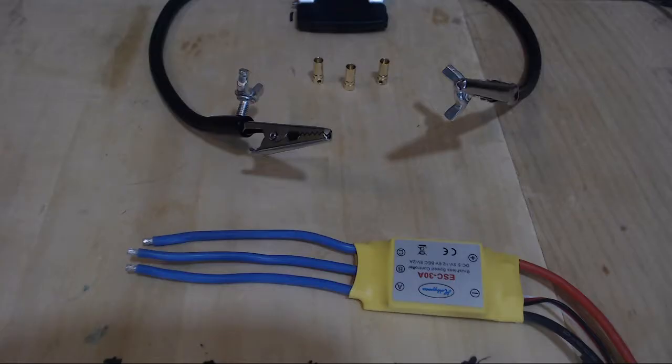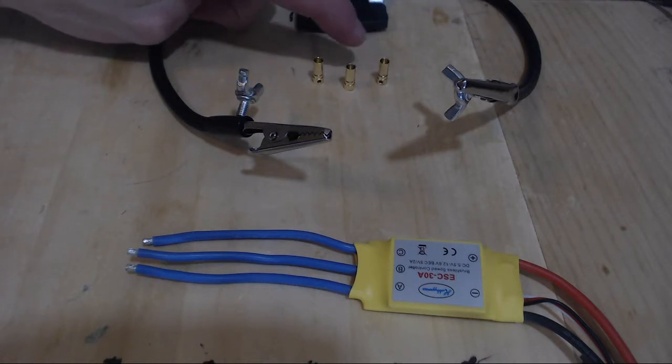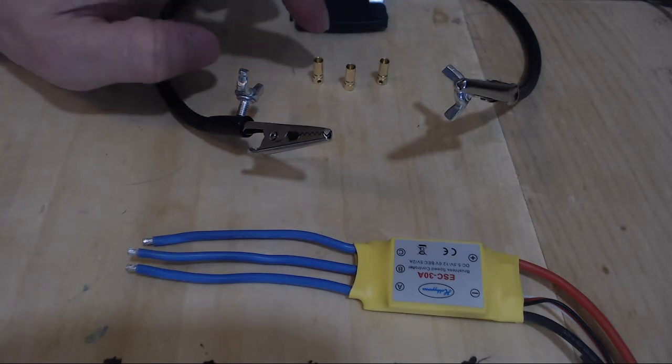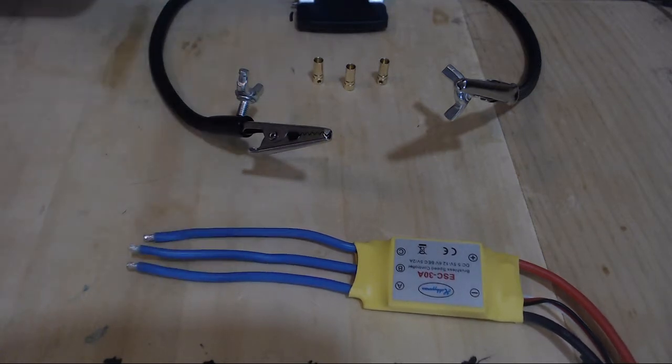Alright, so let's get to soldering. We have pulled out these three female ends of the bullet connectors from the motor box and we are going to need to solder these three ends to the three blue cables of our ESC.